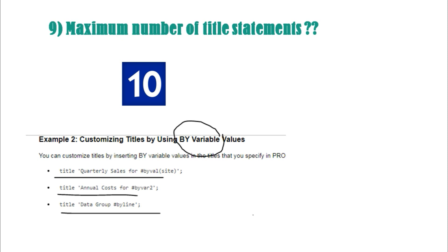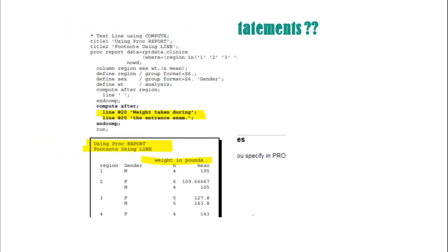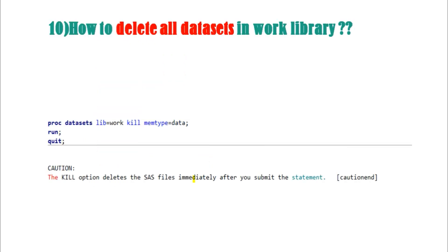The ninth question: titles and footnotes are limited to 10, but if you need more, you can customize your output — RTF, PDF, or notepad — by adding lines in the COMPUTE block or a BY section in PROC REPORT. You can write additional lines that act as titles and footnotes. Using COMPUTE AFTER, you can print extra lines before a page break, which serve as custom titles and footnotes.